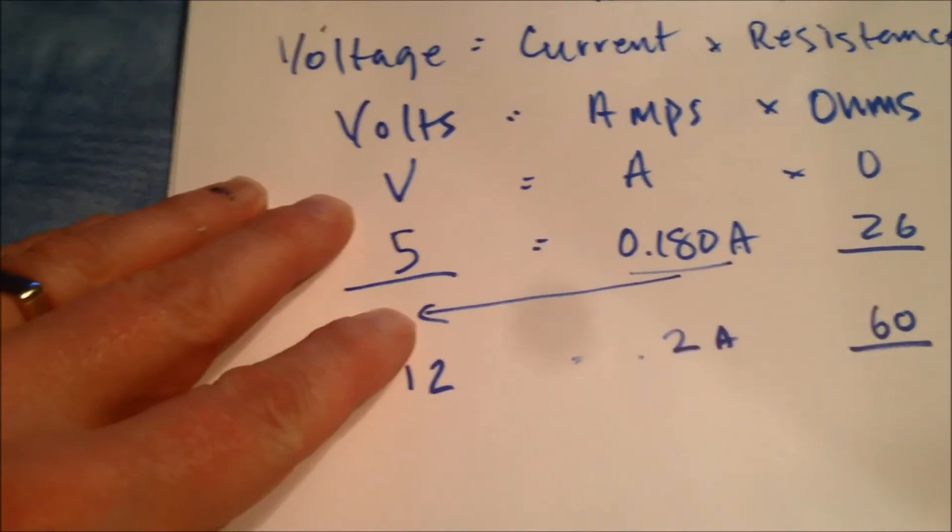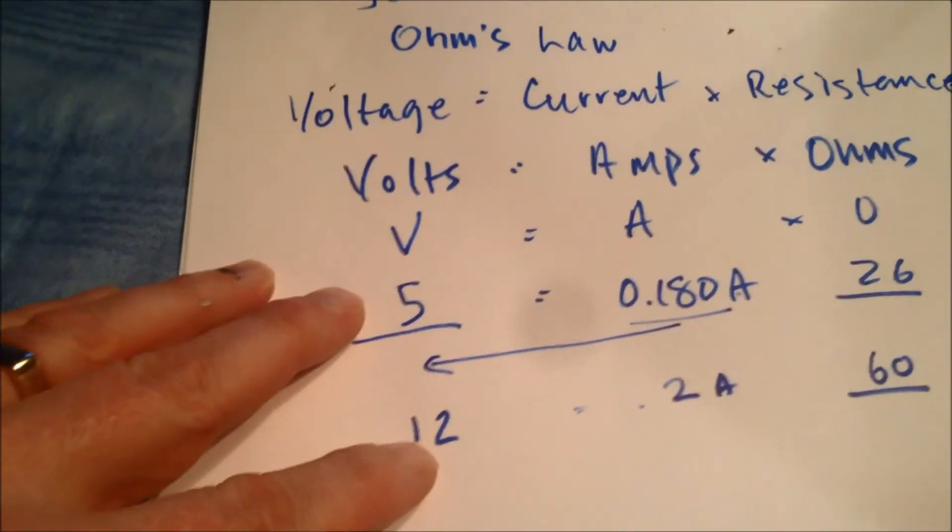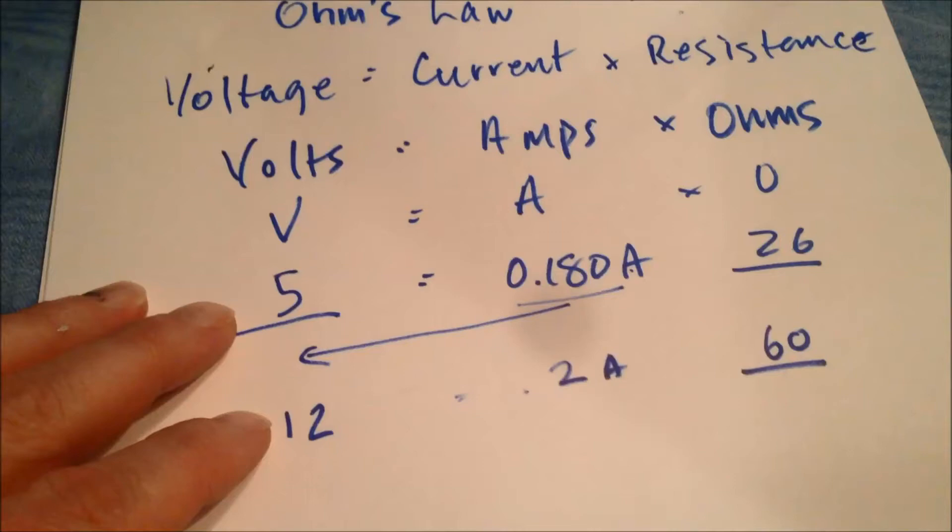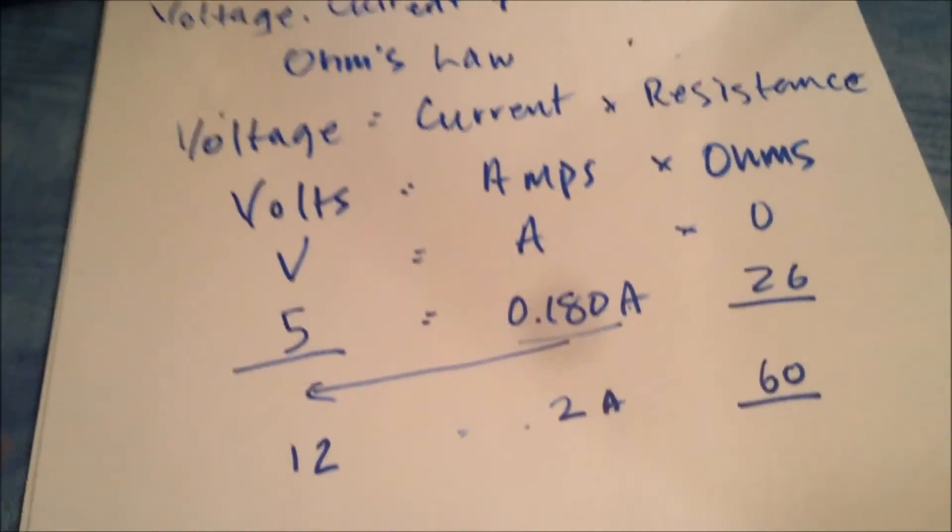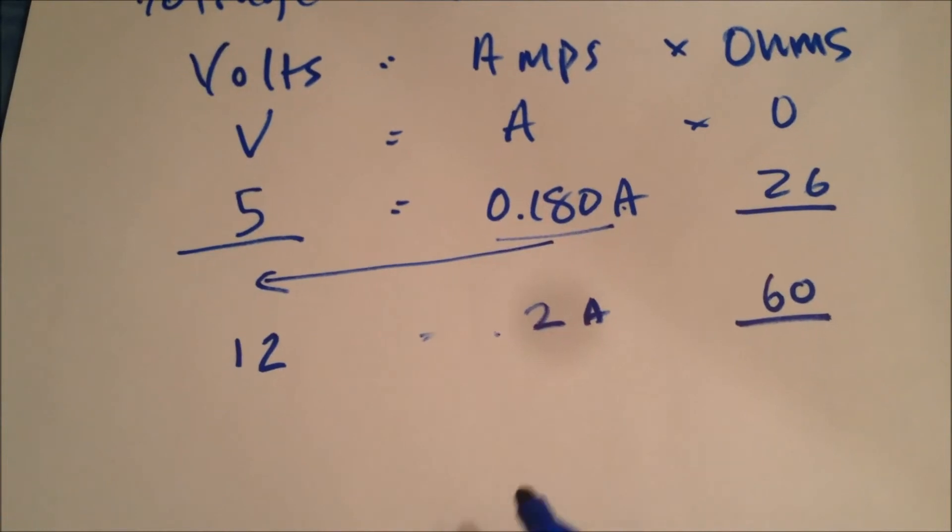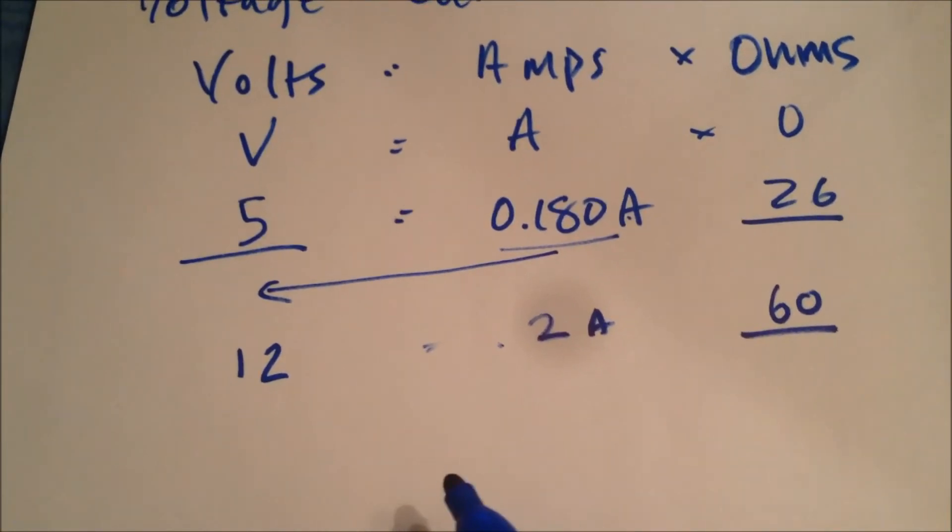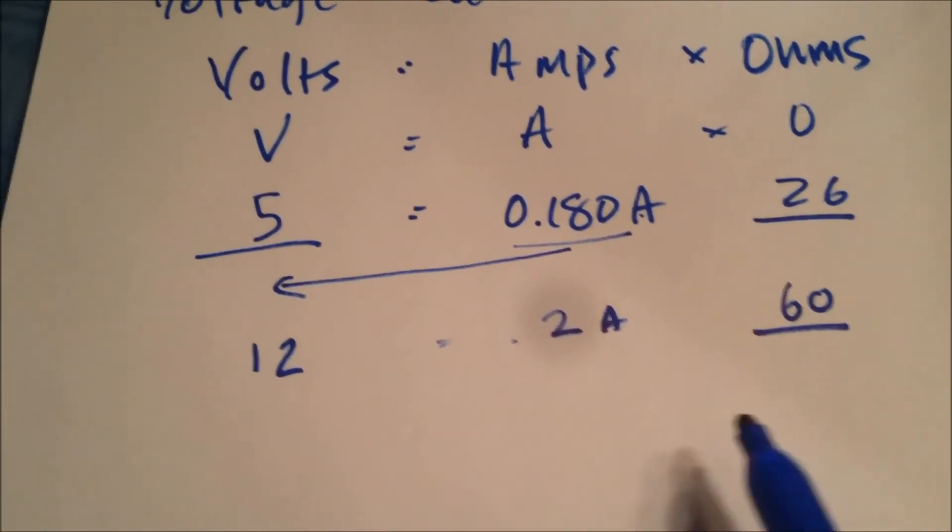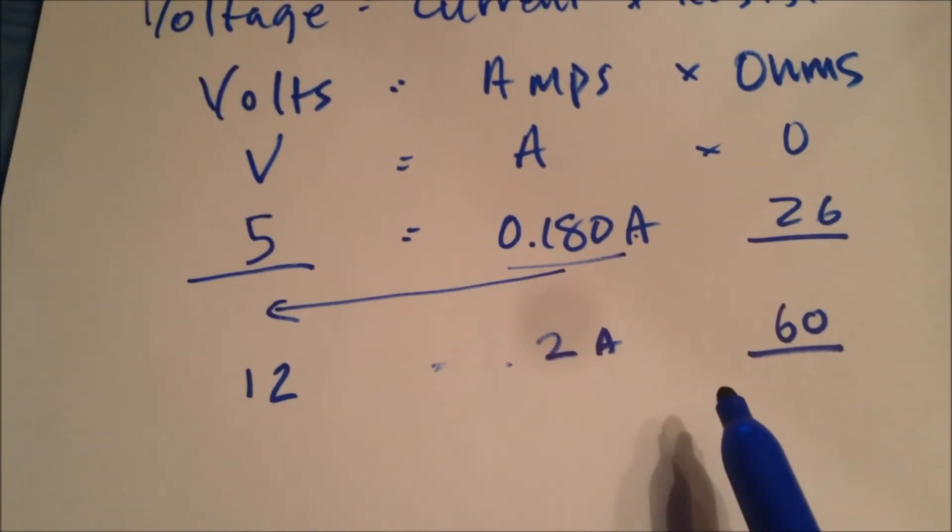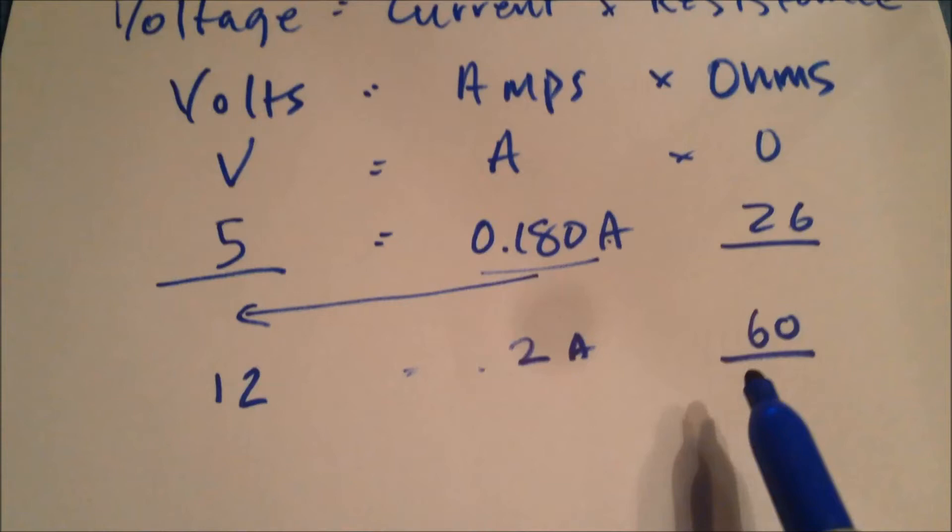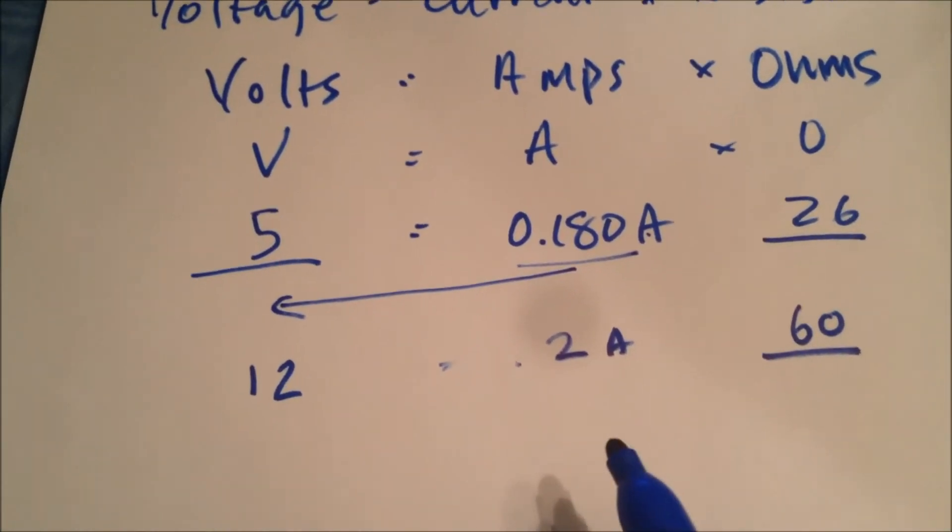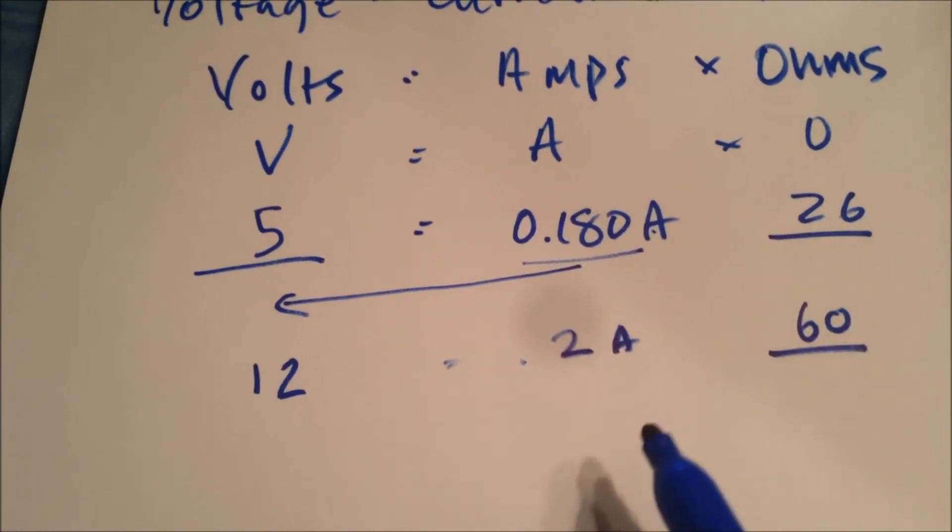Just to recap, voltage never changes. You always have 120 or 220 volts at your wall outlet. You have 12 volts in your car battery. In my case, I've always got 5 volts in the power supply. To change how much energy is supplied to a device, in this case I want to get the fan to slow down. You have to change this side of the equation, the resistance, because we want to add resistance in order to reduce the current.